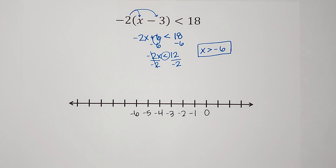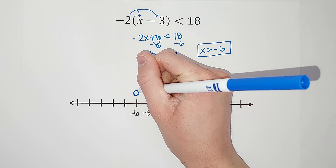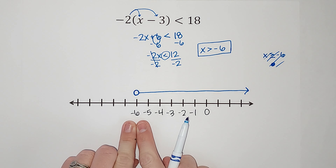Now we're going to show that in graph form. Here's my number line — I'll mark 0, negative 1, negative 2, negative 3, negative 4, negative 5, negative 6. Negative 6 is my placeholder here, so I'm going to put an open circle at negative 6. If this had been x is greater than or equal to negative 6, this would be a closed circle because it could include negative 6 — but since it's just greater than, it's an open circle.